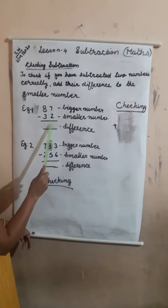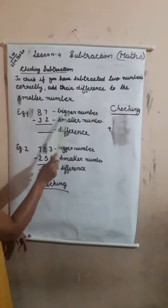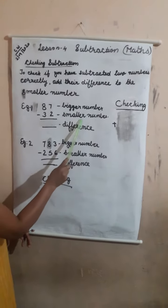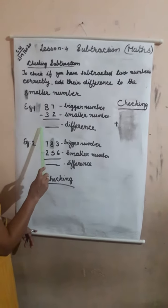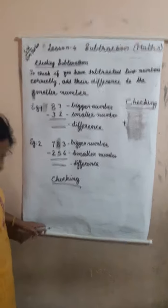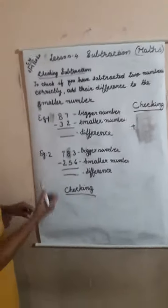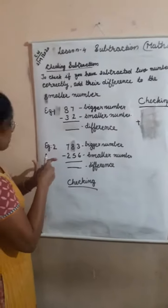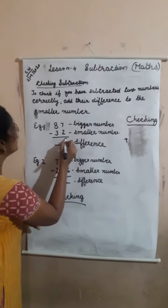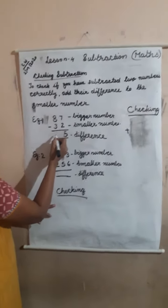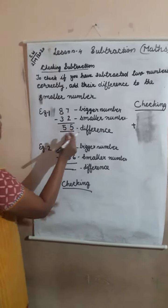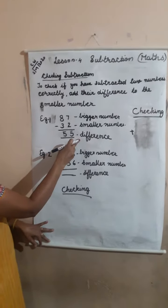87 minus 32. 87 is the bigger number, 32 is the smaller number. Now let us find the difference. First subtract the ones: 7 minus 2 is equal to 5. Then 8 minus 3 is equal to 5. Our difference is 55.